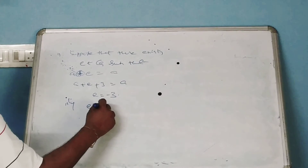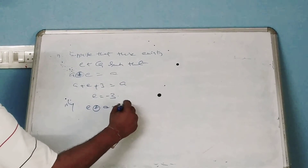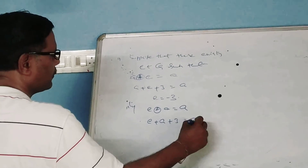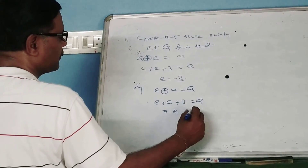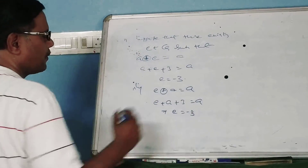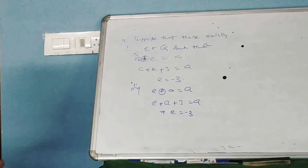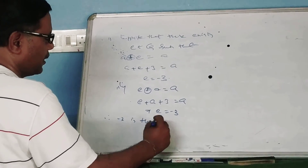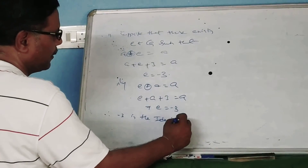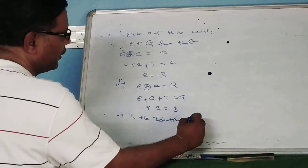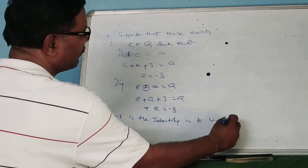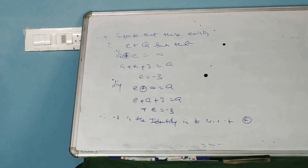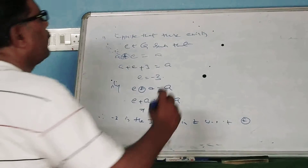Similarly, E circular-plus A is equal to A gives E plus A plus 3 equal to A. In this case also, E is equal to minus 3. Therefore, minus 3 is the identity element in Z with respect to circular-plus.